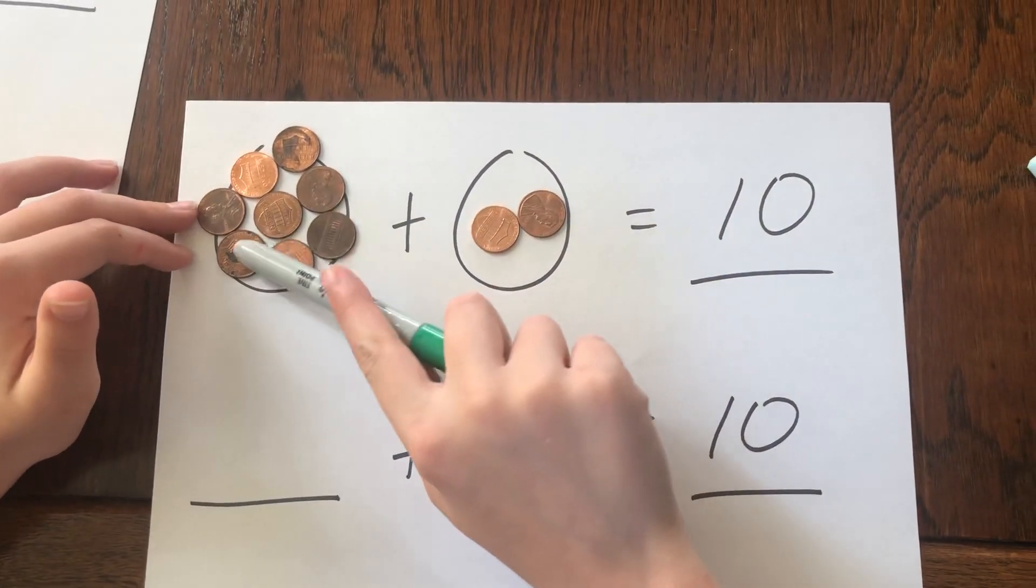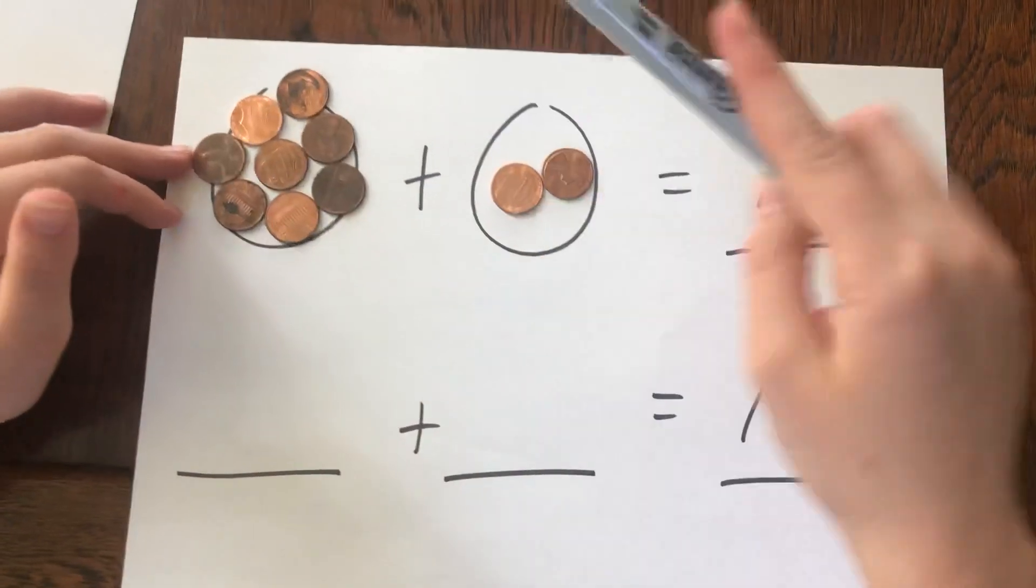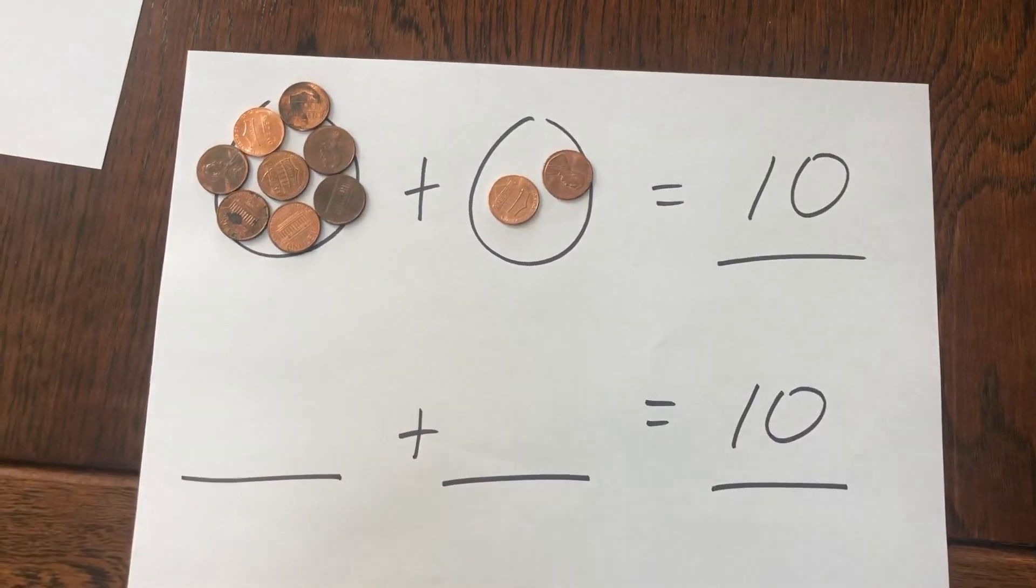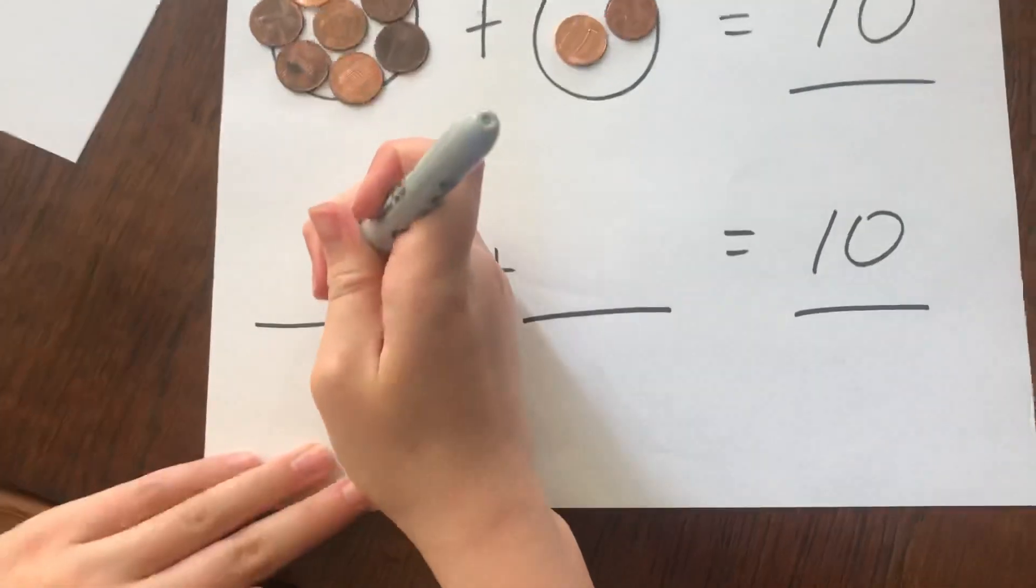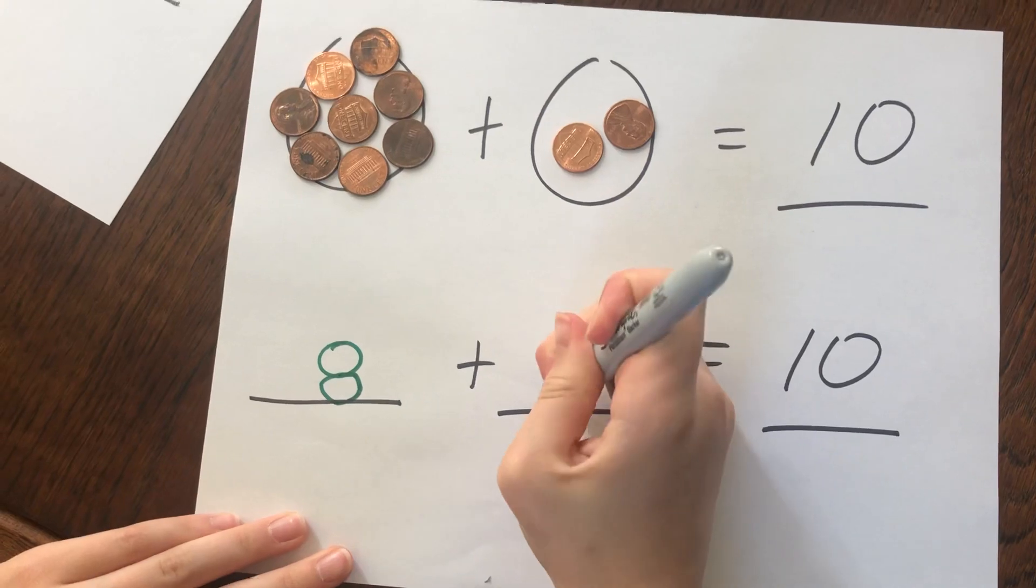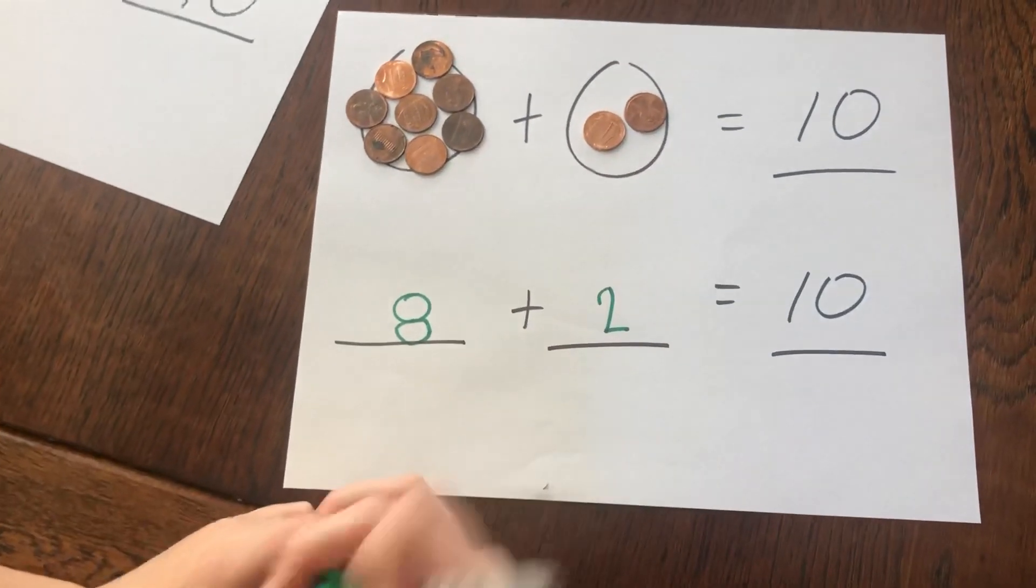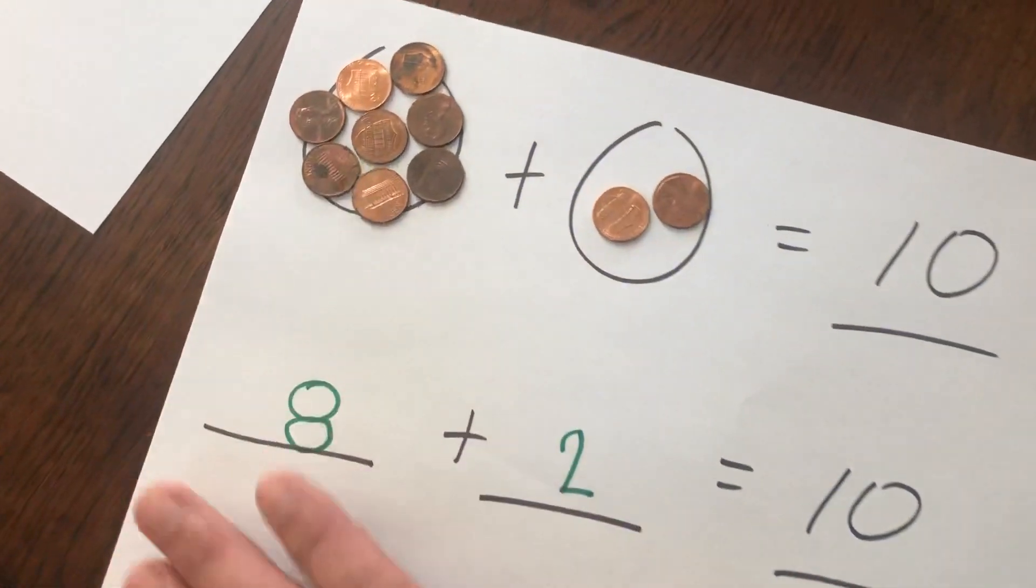One, two, three, four, five, six, seven, eight, and one, two. So I'm going to write that down here. I'm going to write eight plus two equals ten. Because I had two in those circles and eight in this circle.